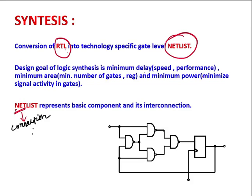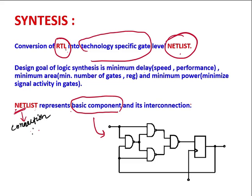A netlist is a list of connections. The netlist represents basic components or basic gates and their interconnection. For example, here is one circuit with four NAND gates and one flip-flop — this is how a netlist looks like, showing the basic components and their interconnection.